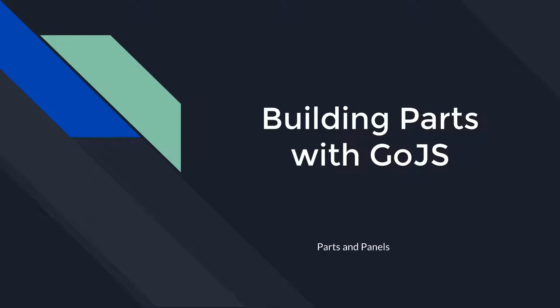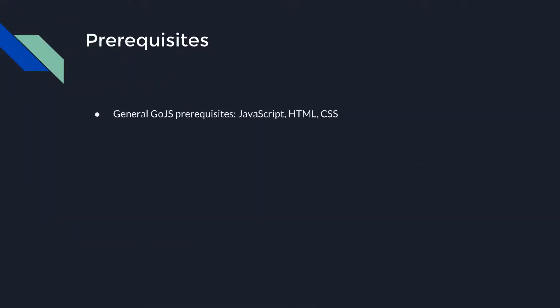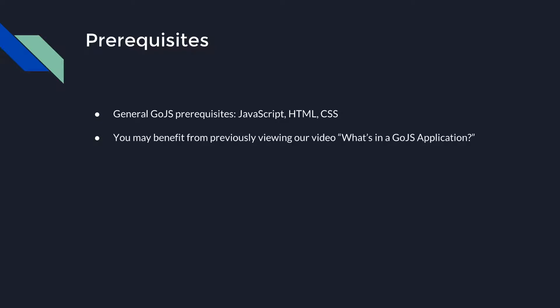Welcome to another video in our Go.js beginner video series. This video will explain the basic building blocks for creating parts in Go.js. We'll examine the Part, Panel, and GraphObject classes, and see how they can work together to make nodes and links with as much detail as you need. Using Go.js requires programming in JavaScript and familiarity with HTML and CSS. This video does not require any prerequisite knowledge of Go.js topics, but you may benefit from first viewing the video titled 'What's in a Go.js Application?', which delivers a broad overview of all the main pieces of a Go.js project.